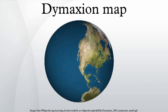A 1967 Jasper Johns painting titled Map, depicting a Dimitian map, hangs in the permanent collection of the Museum Ludwig in Cologne.